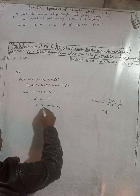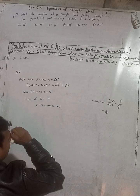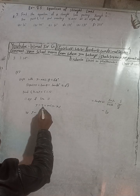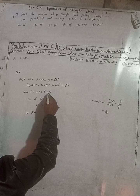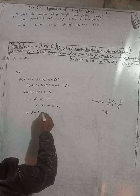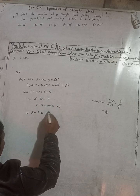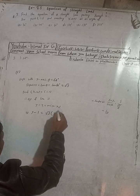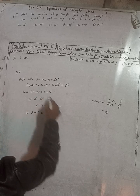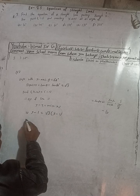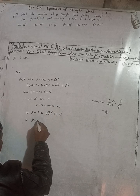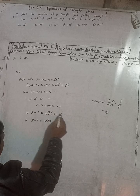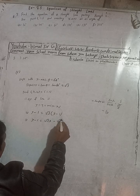Therefore the equation of the line is y minus y1 equals m into x minus x1. This gives y minus 1 equals root 3 into (x minus 1), which expands to y minus 1 equals root 3 x minus root 3.